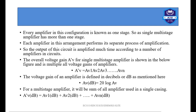The voltage gain can also be represented in decibels. To convert to dB, the voltage gain in dB is represented as 20 log(AV). For a multi-stage amplification process, the total gain in dB is the sum of all individual stage gains: AVdB = AV1(dB) + AV2(dB) + ... continuing for however many stages are included.